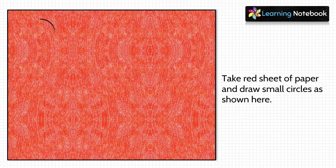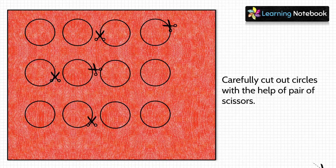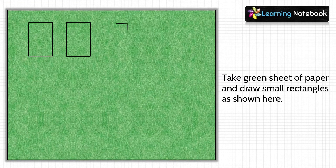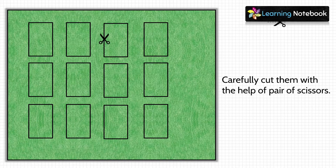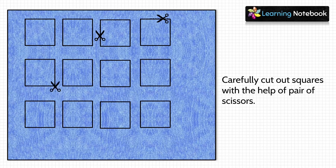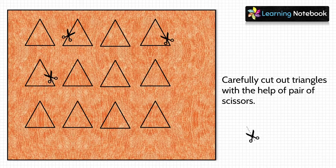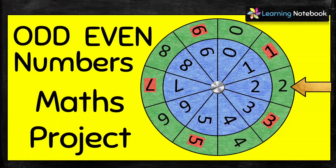In the first step, take a red sheet of paper and draw small circles on it as shown, then carefully cut out these circles using a pair of scissors. In the second step, take a green colored sheet, draw small rectangles on it, and carefully cut these rectangles using scissors. In the same way, cut out small squares from a blue colored sheet and small triangles from an orange colored sheet.